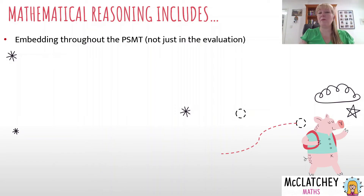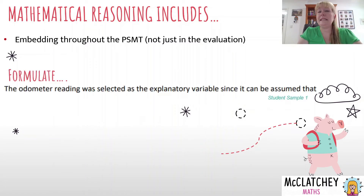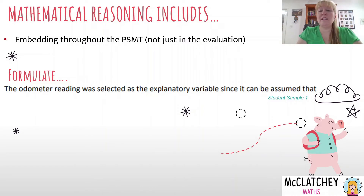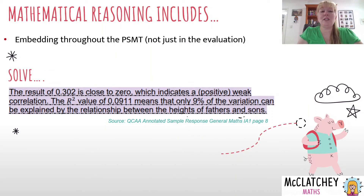Mathematical reasoning can be embedded throughout the whole assignment — it's not just in your evaluation at the end. When you make a decision at the beginning, justify it there. If you observe trends in a graph and decide something about a correlation, justify it there using mathematics. Here's an example from the formulate section: 'The odometer reading was selected as the explanatory variable since it is assumed that...' — they've justified their choice of variable early in the assignment.